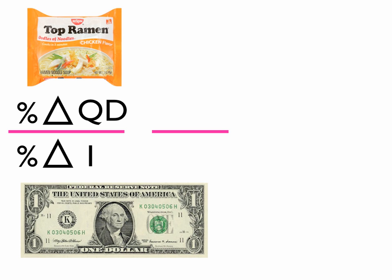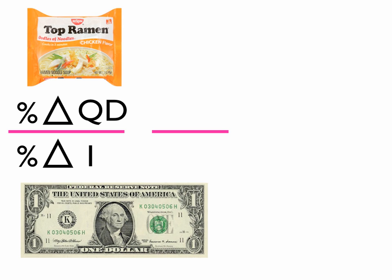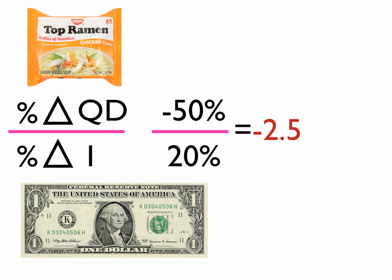Let's look at an example of our favorite lunch menu when we're in college. If our income were to increase by 20% and we note that the percentage change in quantity demanded actually drops by 50%, that would indicate a value of negative 0.25. That value is less than 0, so that good is considered an inferior good. That makes sense — income increases, and I'm going to buy less top ramen.